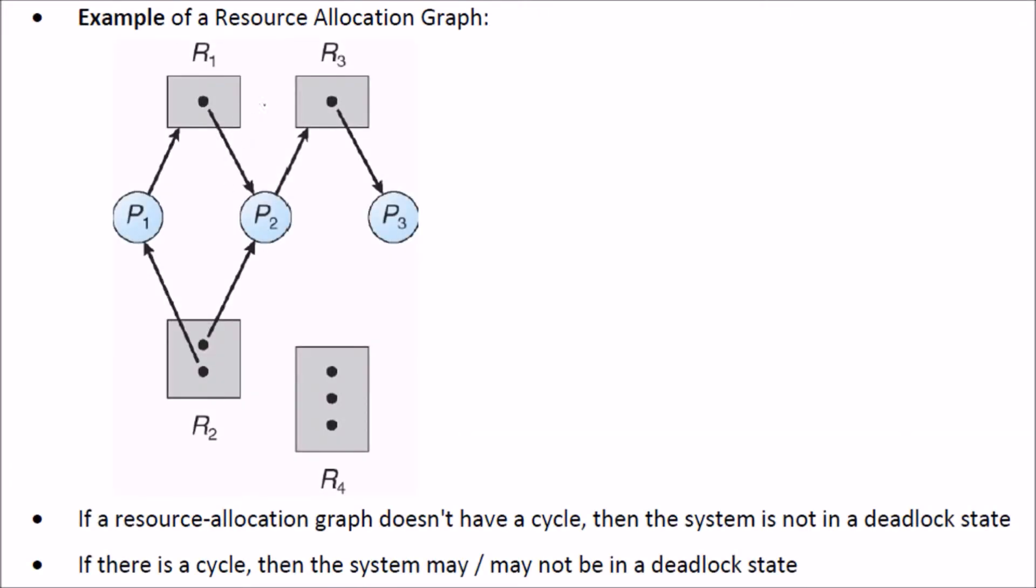This is an example of a resource allocation graph. If you see, let's start with P2. P2 is holding R1, P3 is holding R3, P1 is expecting R1 and P1 is holding R2. P2 is again asking for R3, it is holding R1. If a resource allocation graph has no cycle, then the system cannot be in a deadlock state.